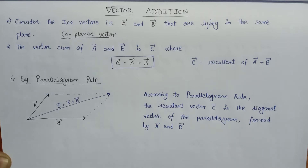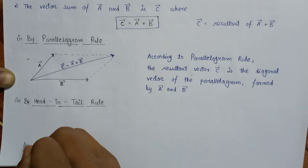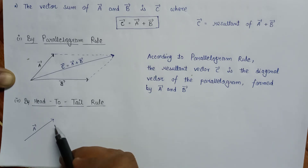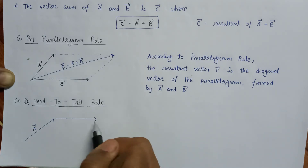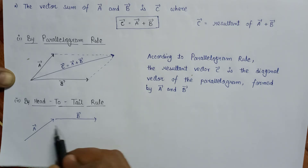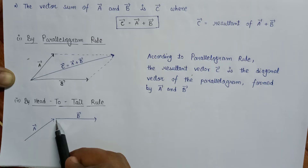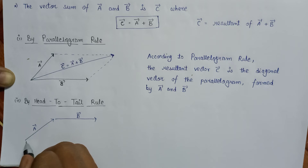Now let us have a look at the second rule, that is the head to tail rule. According to the head to tail rule, if the head of A vector — here is the A vector and this is the head of A vector — is connected to the tail of B vector. Here is the B vector, here is the head of B vector, and here is the tail of B vector. So the head of A vector is connected to the tail of B vector, and the head to tail rule says that the vector sum C vector is the vector drawn from the tail of A vector to the head of B vector.